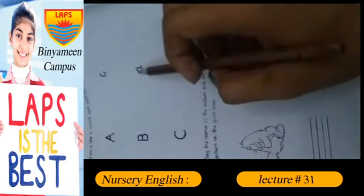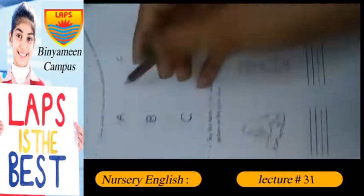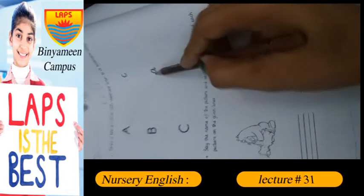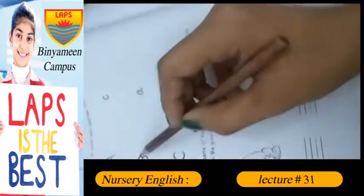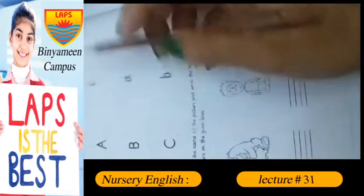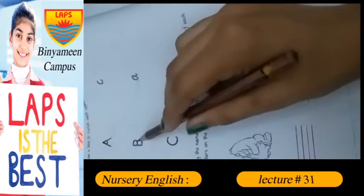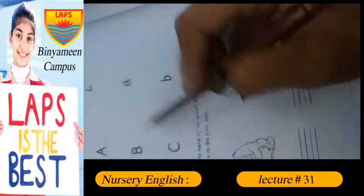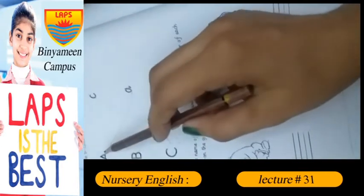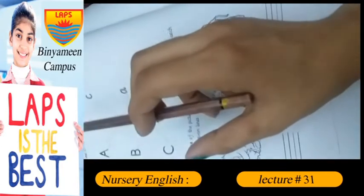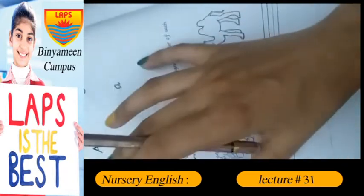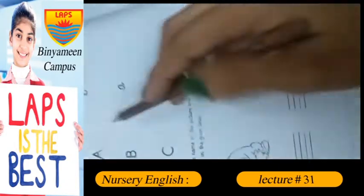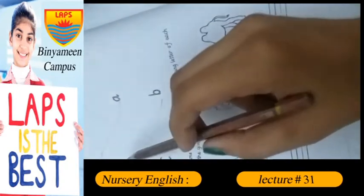I would like to ask: this is our uppercase letter, this is our lowercase letter, and this is our uppercase letter. What is the sound? A, B, C, Kh.